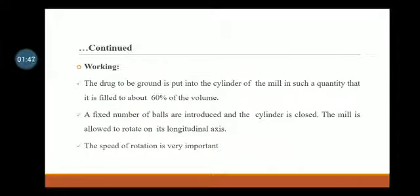Working: The drug to be ground is put into the cylinder of the mill in such a quantity that it is filled to about 60% of the volume. A fixed number of balls are introduced and the cylinder is closed. The mill is allowed to rotate on its longitudinal axis. The speed of rotation is very important.